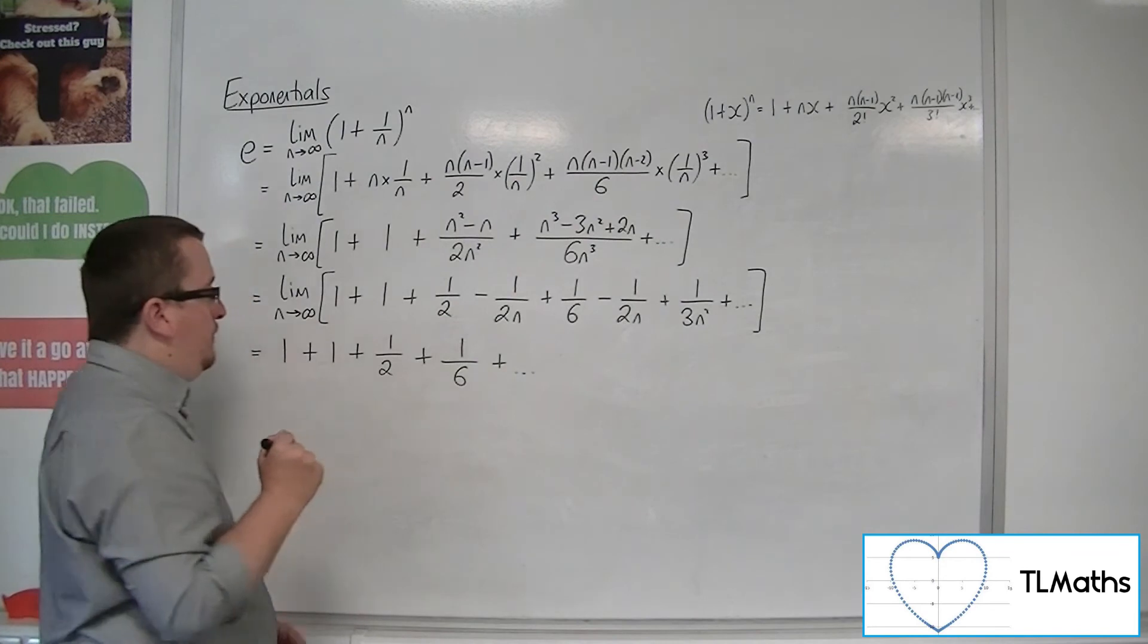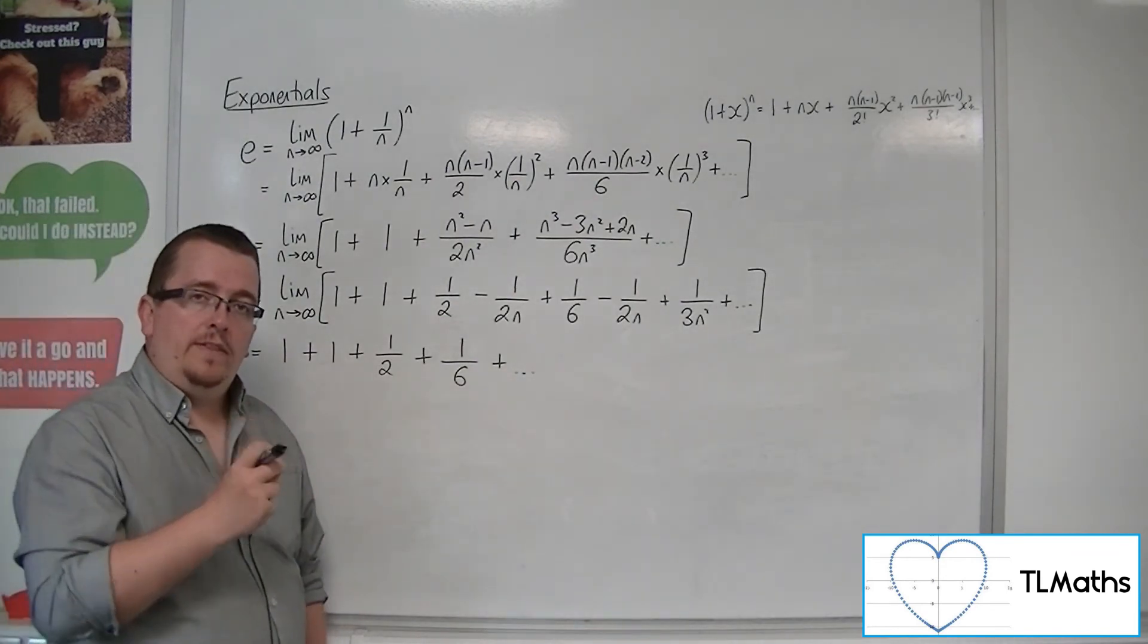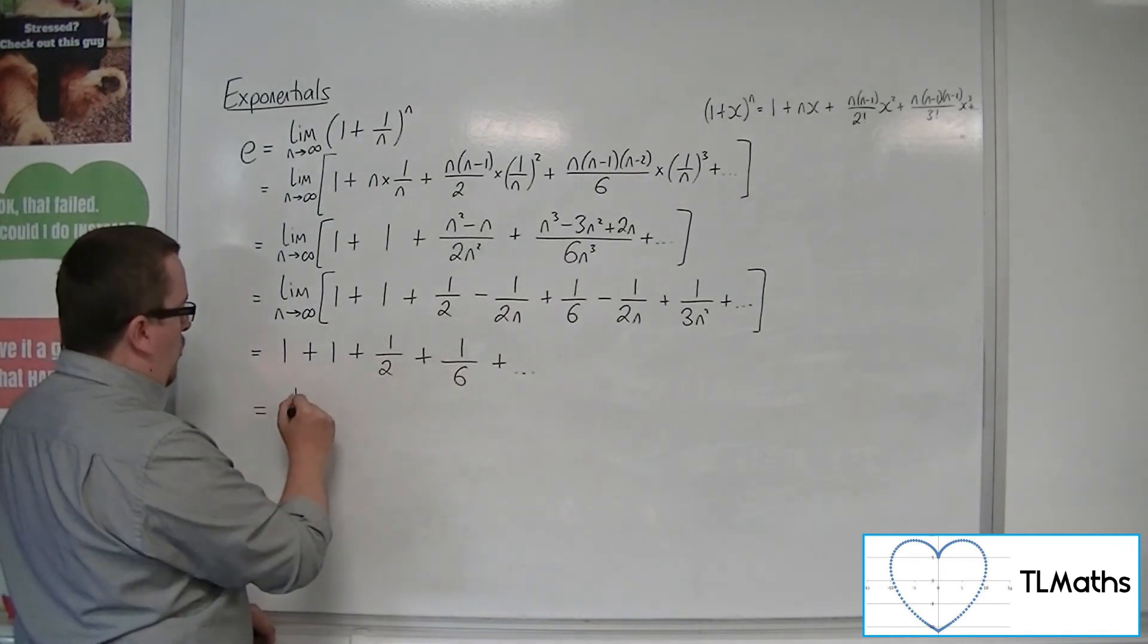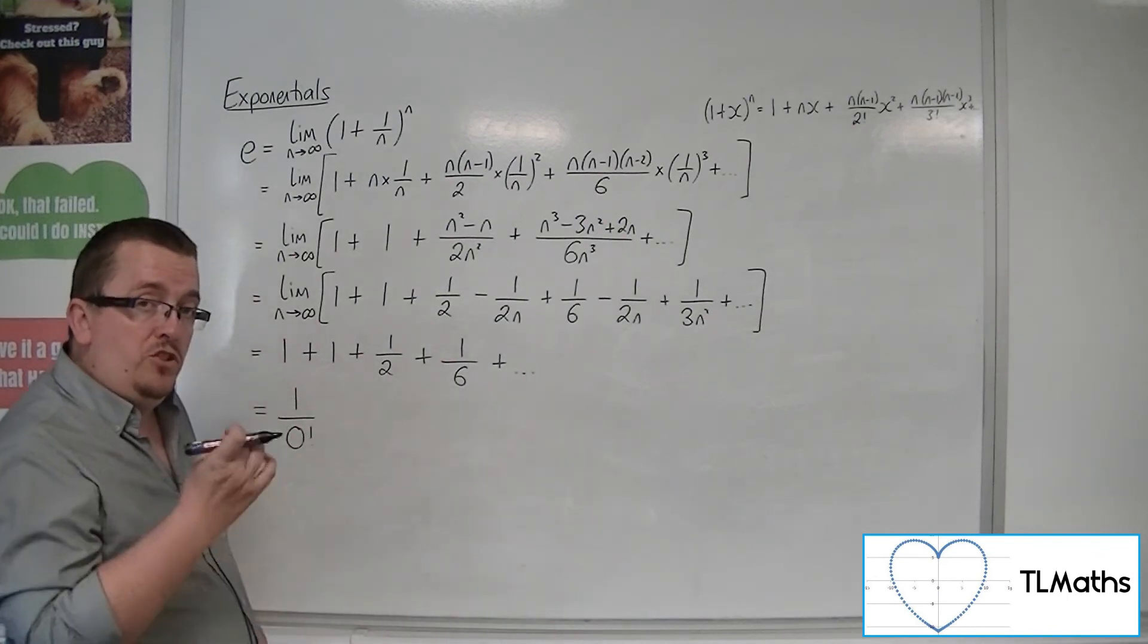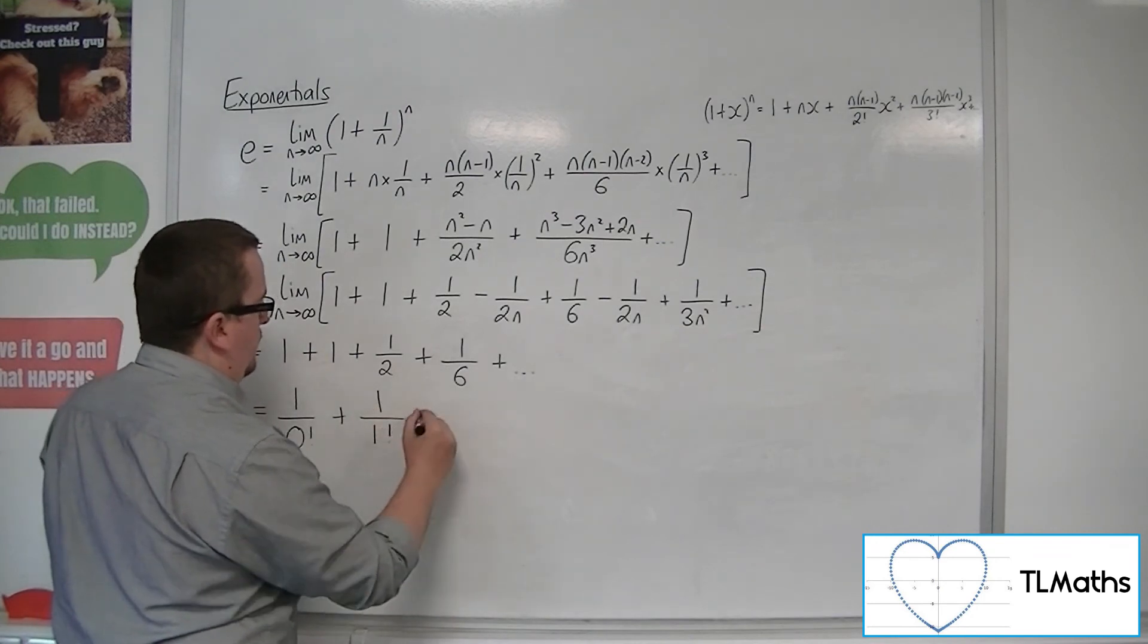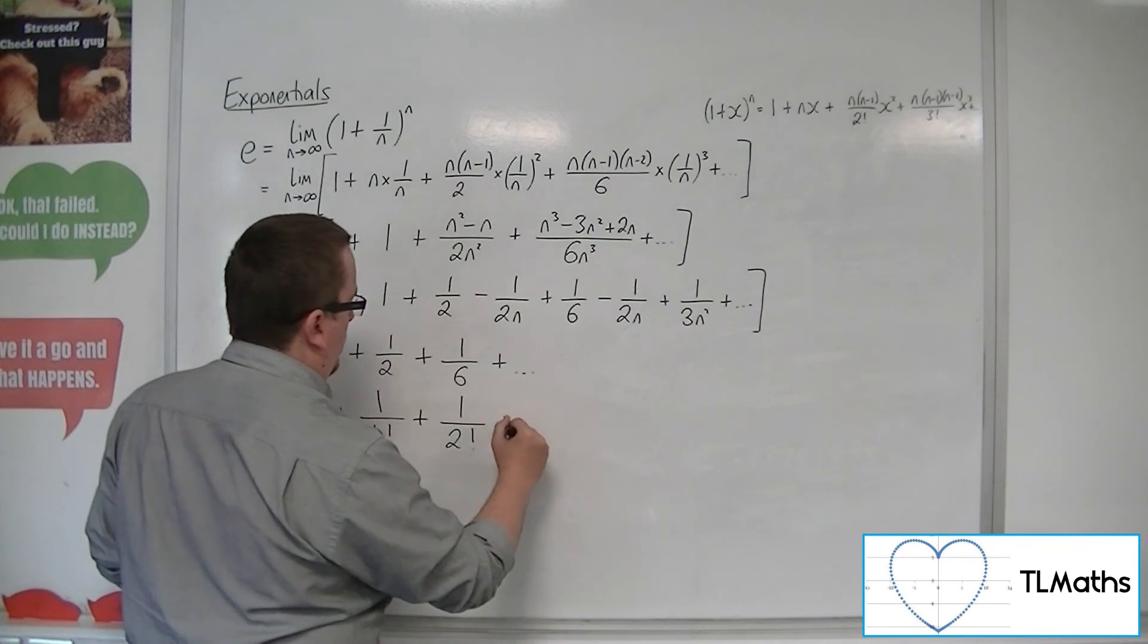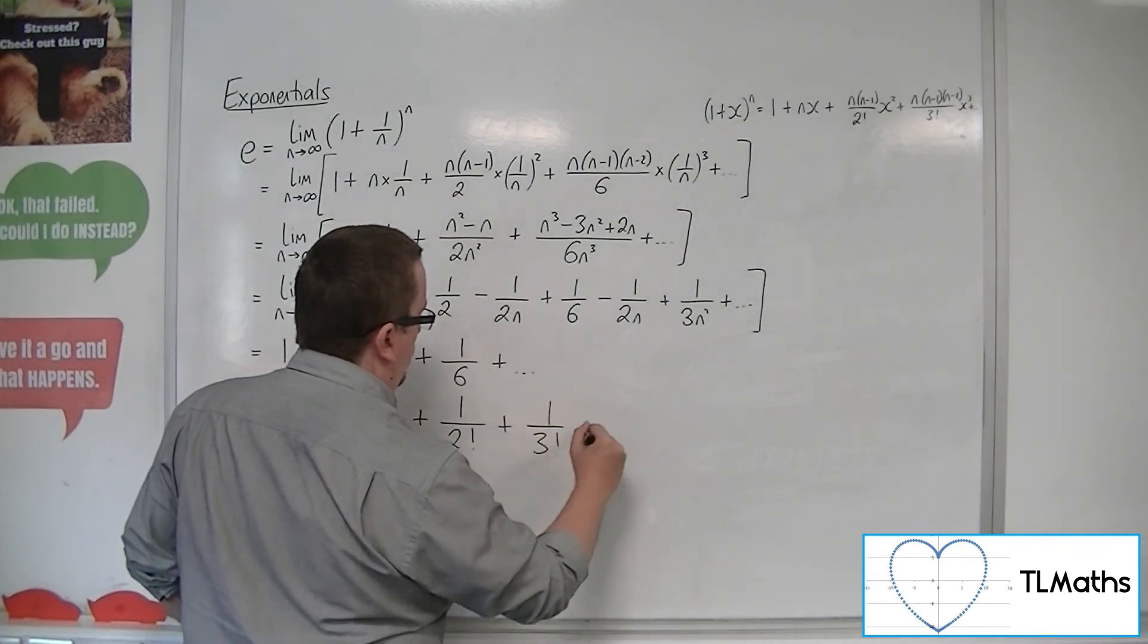Now, how can we write this? Well, this is actually 1 over 0 factorial, because 0 factorial is just 1. 1 could be written as 1 over 1 factorial. 1 half is 1 over 2 factorial. 1 sixth is 1 over 3 factorial.